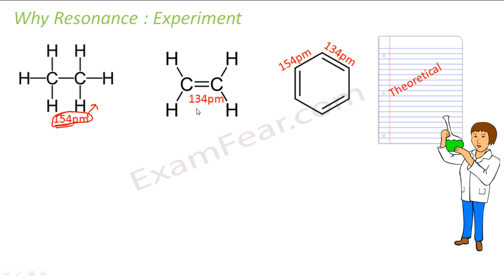Similarly, when they saw ethene and propene, they found that the CC double bond is always 134 picometers — this is the theoretical value. So if I draw the structure of ethane, the bond length is 154 picometers, and if I draw ethene, the carbon-carbon bond length is 134 picometers, as proved experimentally through many experiments.